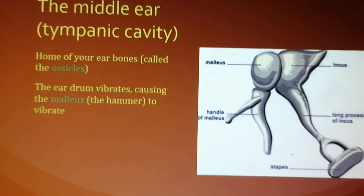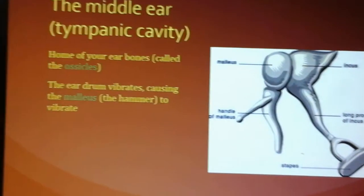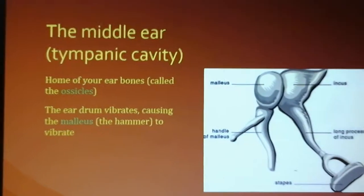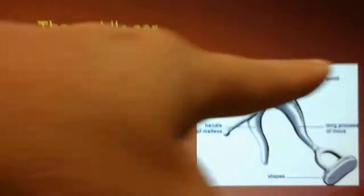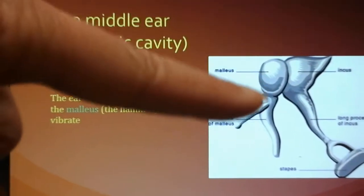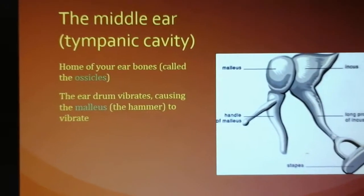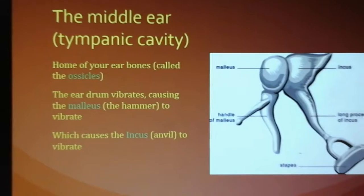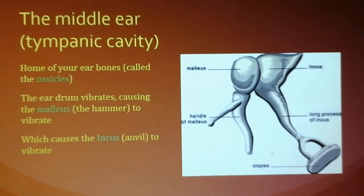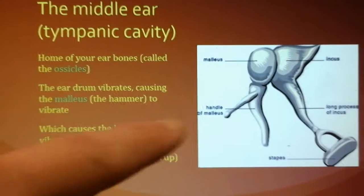The eardrum vibrates, causing the malleus to vibrate, which hits the incus, which vibrates, which hits the stapes and causes it to vibrate. Also in this area you have your eustachian tube. You'll need to know the parts of the ear — find a diagram on Google or my website under images and diagrams. Your eustachian tube goes up from your throat, equalizing air pressure on both sides of the eardrum to give it the proper tautness.